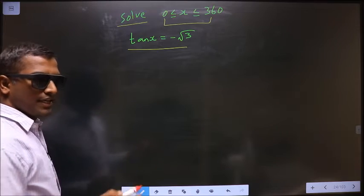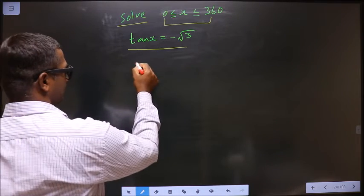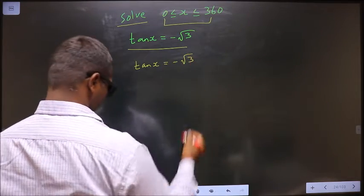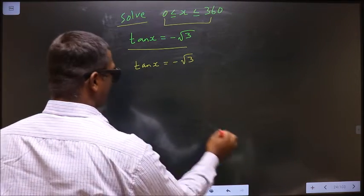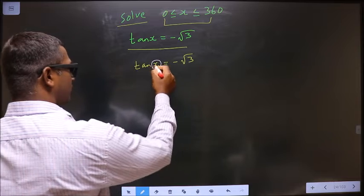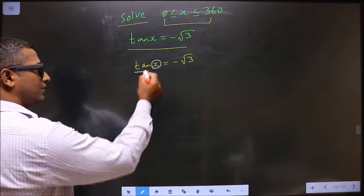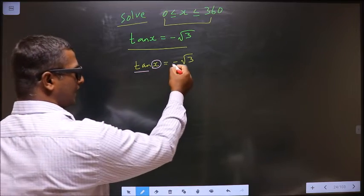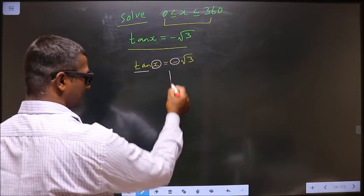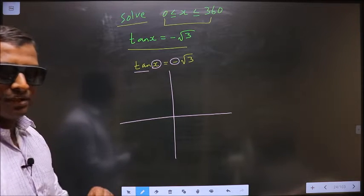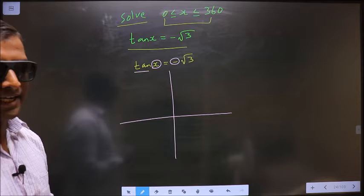The given equation is tan x equals minus root 3. You need to find the values for x. Here you have tan and here you have negative. So now you check in what all quadrants is tan negative?